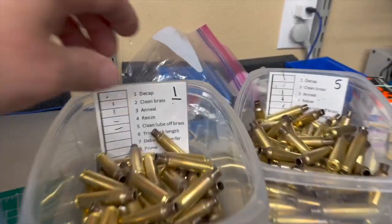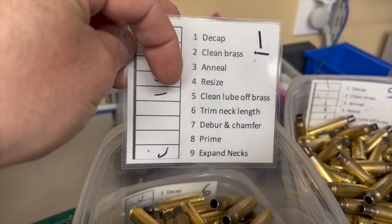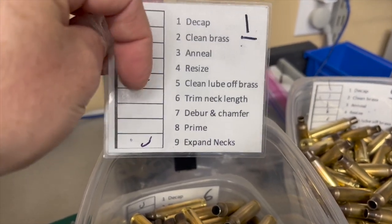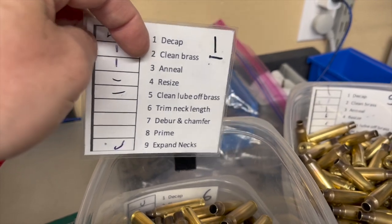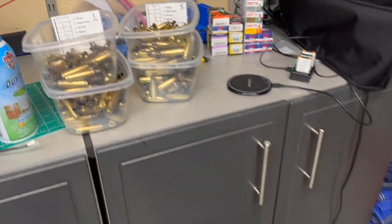You can see on my checkoff cards we've got decap, clean brass, anneal, resize, clean off lube, and expand. Next we just have to trim, chamfer, deburr, and prime. That'll be tomorrow.